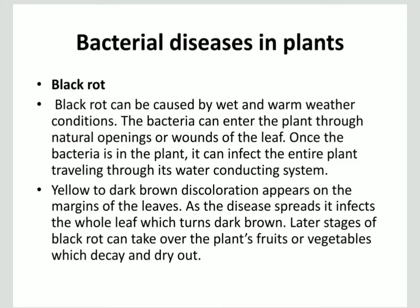Bacterial diseases in plants: Black rot can be caused by wet and warm weather conditions. The bacteria can enter the plant through natural openings or wounds of the leaf. Once the bacteria is in the plant, it can infect the entire plant, traveling through its water-conducting system. Yellow to dark brown discoloration appears on the margins. As the disease spreads, it infects the whole leaf, which turns dark brown. Later stages of black rot take over the plant's fruits and vegetables, which decay and dry out.